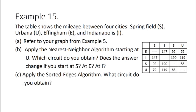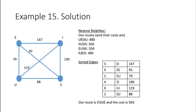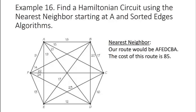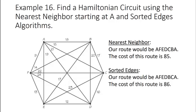Here is the answer — there is the graph, the routes and their costs using nearest neighbor and using sorted edges. Here is one more for you to try: find the Hamiltonian circuit using the nearest neighbor algorithm starting at vertex A, and then the sorted edges algorithm. Pause the video if you want to practice yourself. Here are the answers: the route for nearest neighbor and the route using sorted edges.